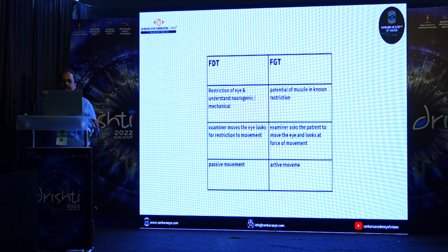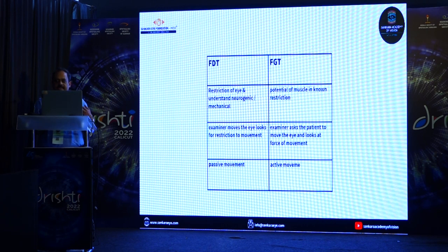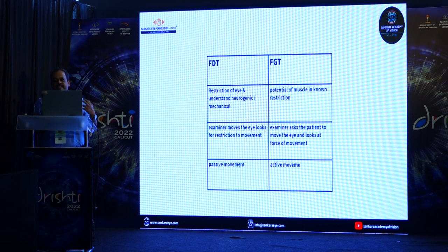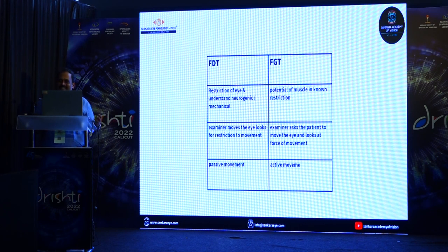The difference between FDT and FGT: in FDT you are looking at restriction — neurogenic vs. mechanical; in FGT you are understanding the potential of the muscle. In FDT the examiner moves the eye and looks for restriction of movement; in FGT the examiner asks the patient to move the eye and looks for a force of movement. FDT is passive, FGT is active. Start looking at strabismus — it is a simple specialization. Look beyond cataracts and refractive surgery.